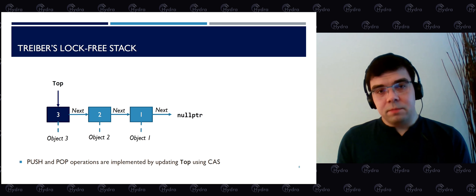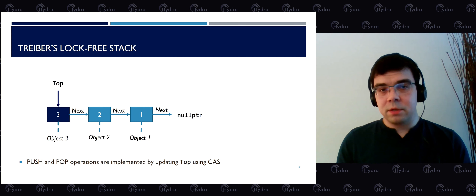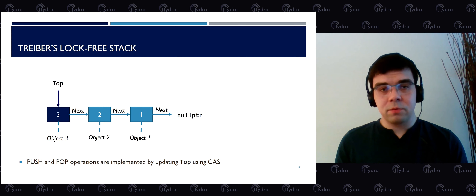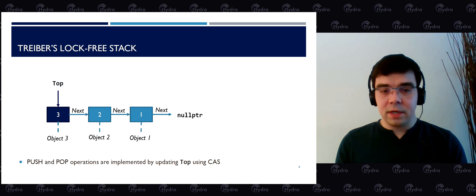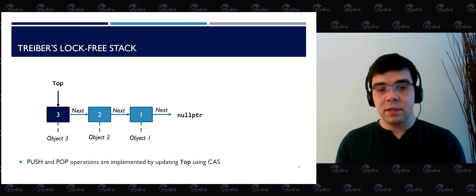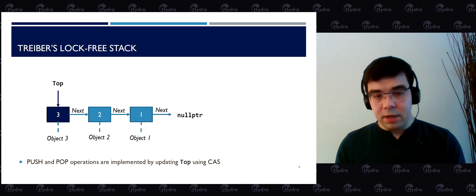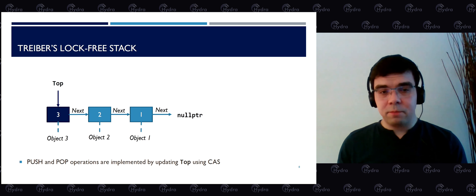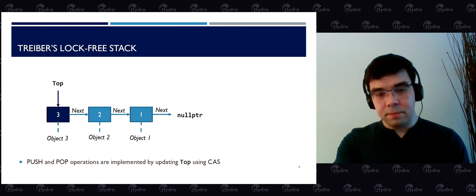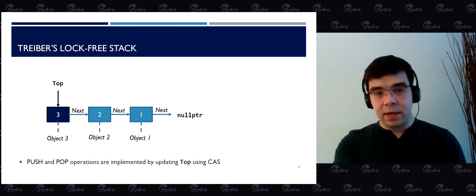Let's look at a very simple data structure: the Treiber lock-free stack. It is effectively a singly linked list keeping objects as part of nodes. We have node 1, node 2, and node 3 linked together, each with a reference to an object. We also have a pointer to the top of the stack at the beginning of the list. Push and pop operations for this stack are implemented using CAS on the top variable.